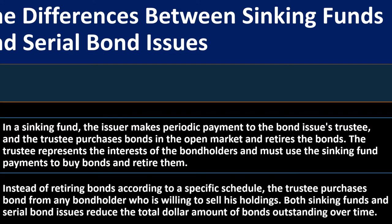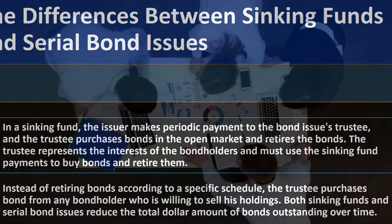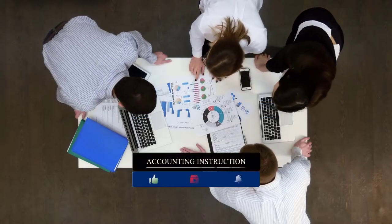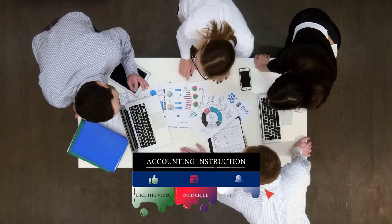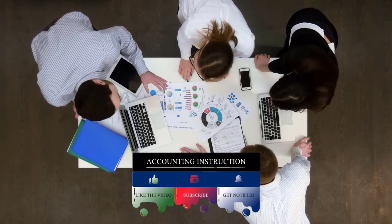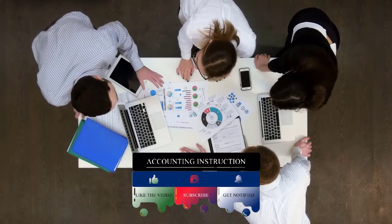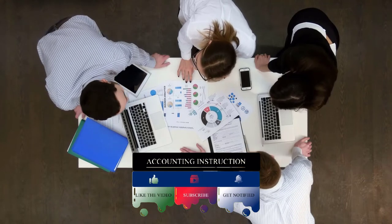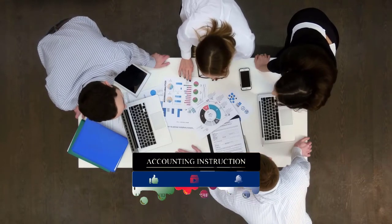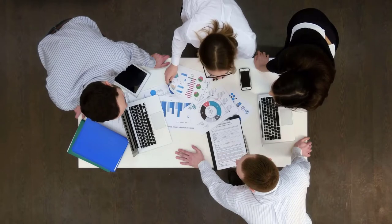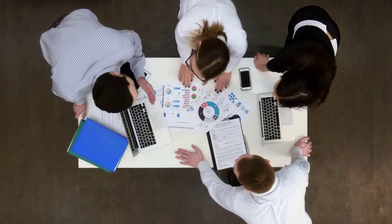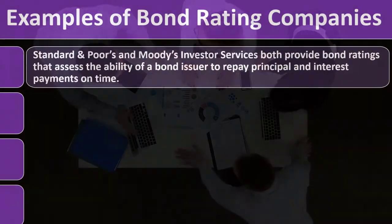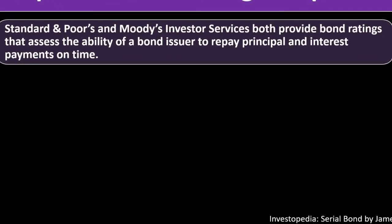Both sinking funds and serial bond issues reduce the total dollar amount of bonds outstanding over time. With a serial structure, the staggered maturity dates mean fewer bonds are outstanding as time passes, which lowers the risk of default. With a sinking fund strategy, you have a set termination date but use the fund to pay off debt early. These are both strategies that can be used to manage bond obligations.